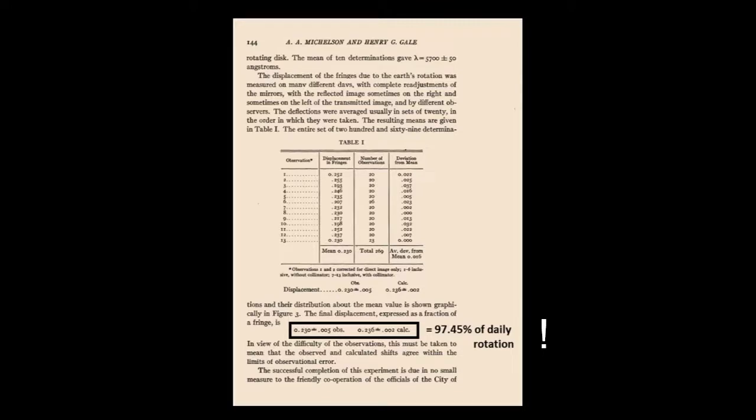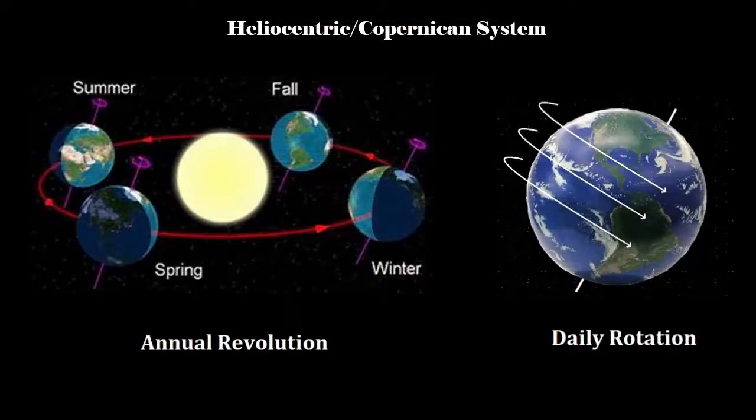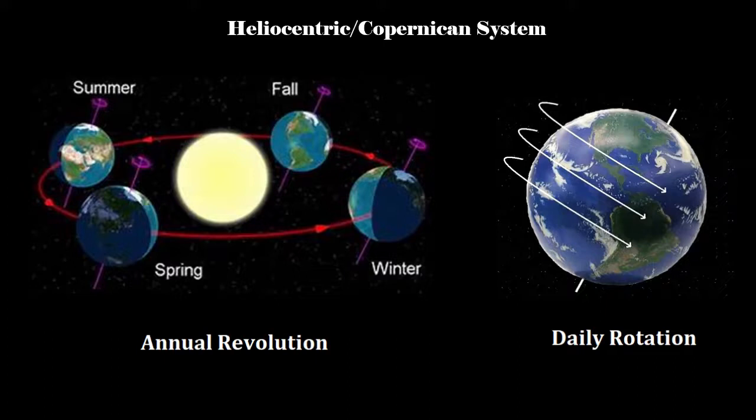For a person who believes in Copernicanism, the results of Michelson's two experiments are certainly perplexing. To the Copernican, the two experiments contradict one another for the simple reason that the Copernican system needs both a revolution of the Earth around the sun and a sidereal rotation of the Earth on its axis, since the Copernican theory must account for both the day-night rhythm and the four seasons. The Copernican theory cannot have a revolution without a rotation, or a rotation without a revolution. In other words, the Copernican system must demonstrate both, otherwise it is falsified by the experimental evidence. But Michelson's two experiments showed only one movement, a daily rotation.